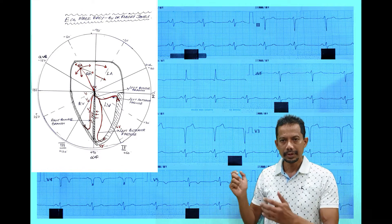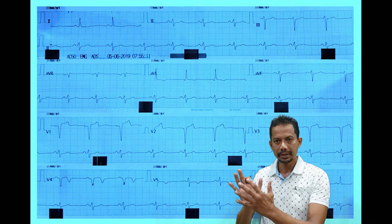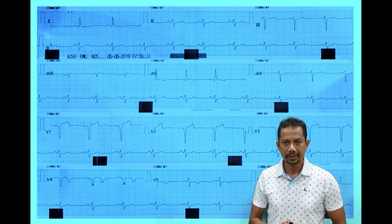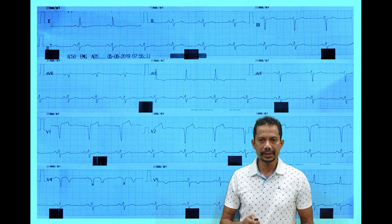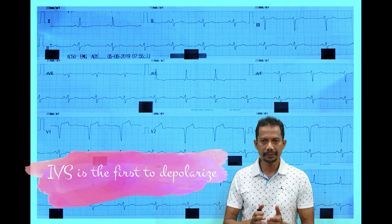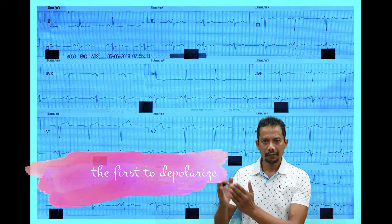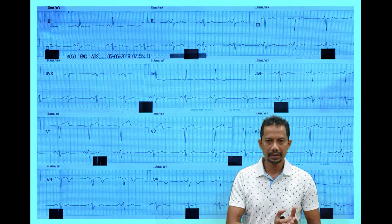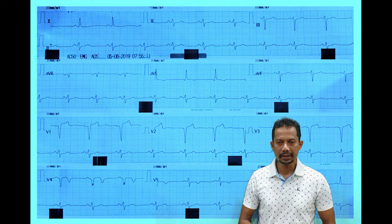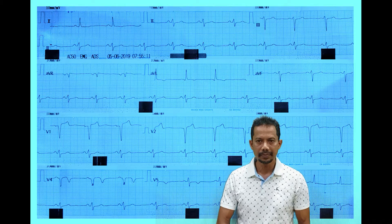V1 and V2 perceive the impulse coming towards them when the interventricular septum is getting depolarized. In previous ECGs we discussed that the interventricular septum is the first part of the myocardium that is depolarized from left to right by the left bundle branch. Some books say it is a septal fascicle that depolarizes the IVS.